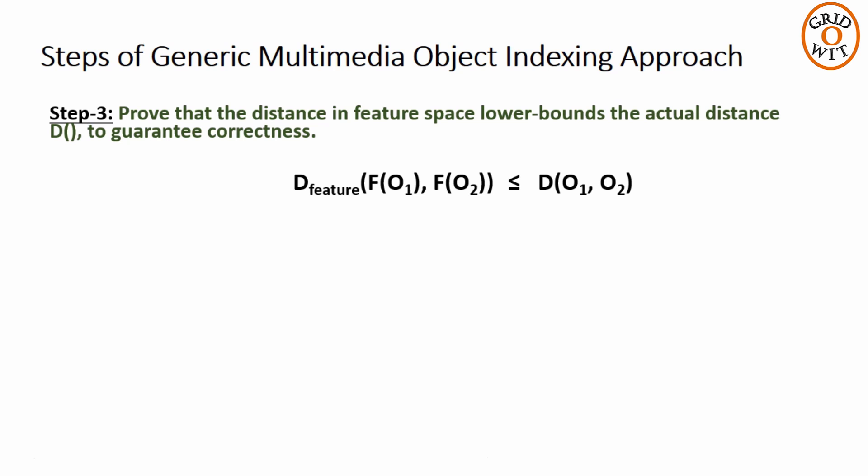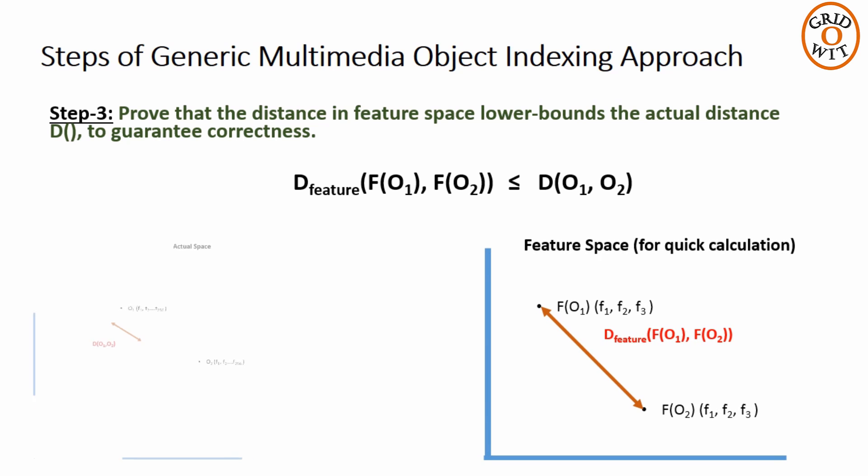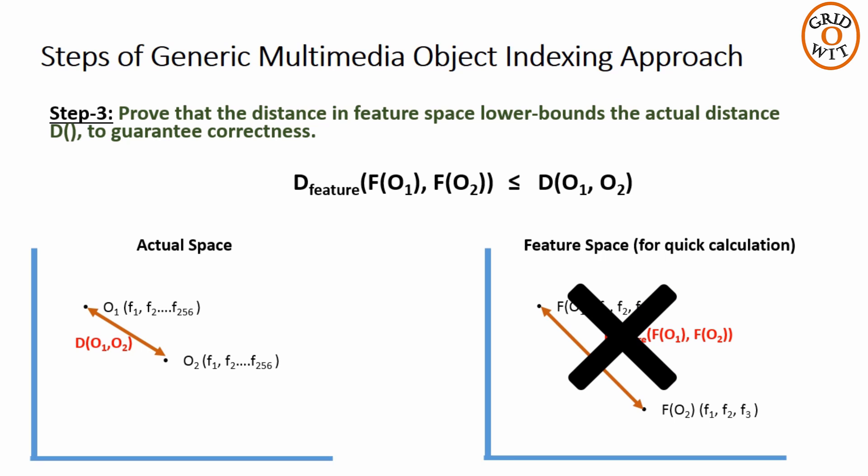Because if the distance in the feature space is more than the actual distance, it represents more dissimilarity, which is actually not true. And this leads to wrong results of searching.